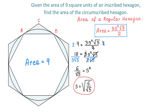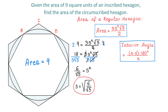In a regular hexagon, each interior angle measures 120 degrees, so angle C measures 120 degrees. In general, to find the interior angle of any regular polygon, we use the formula: (n minus 2) times 180 degrees divided by n, where n represents the number of sides. For a hexagon with 6 sides, (6 minus 2) times 180 degrees divided by 6 equals 120 degrees.